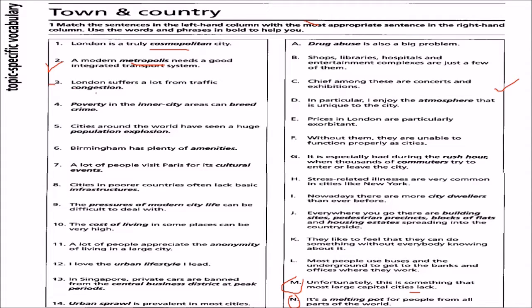Three: London suffers a lot from traffic congestion. We match it with G — it is especially bad during the rush hour when thousands of commuters try to enter or leave the city.